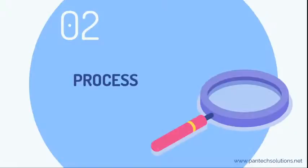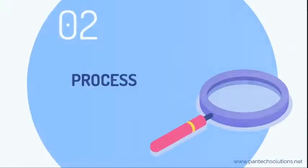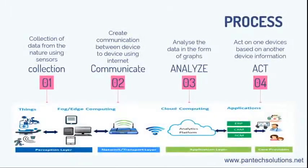The process of IoT with data science: collection of data, then data communication, analyzing, and act. Based on some sensors, we collect data, and then we save it in cloud computing — like fog computing or edge computing. Then based on a router or any other network, we pass that data to the respective users.